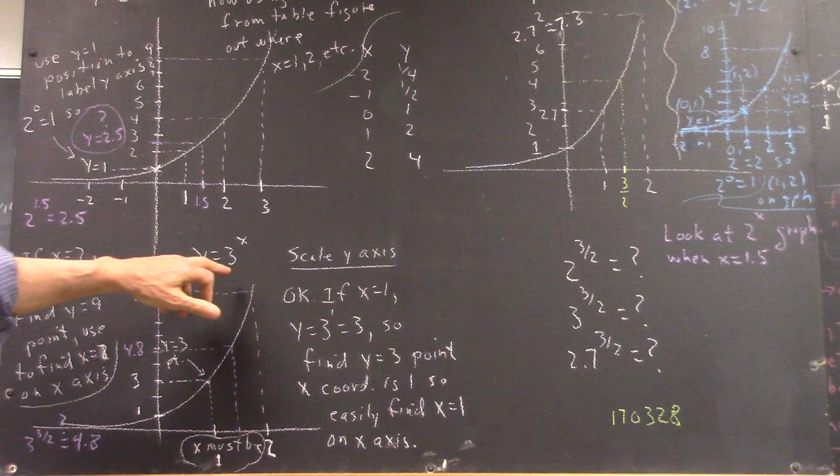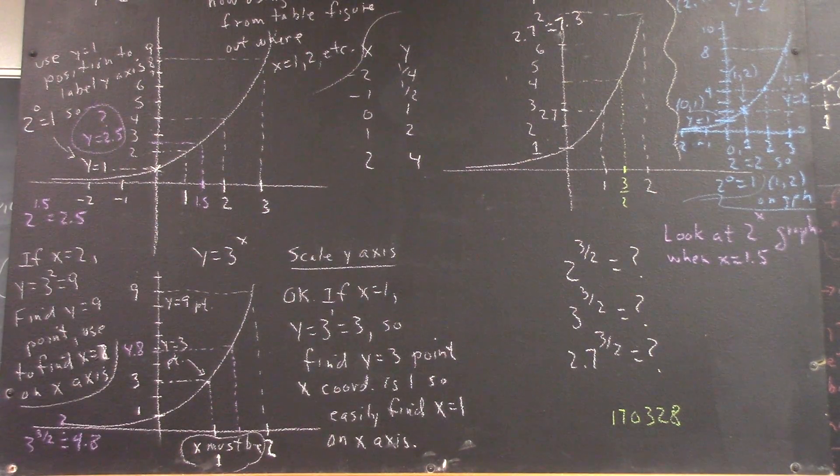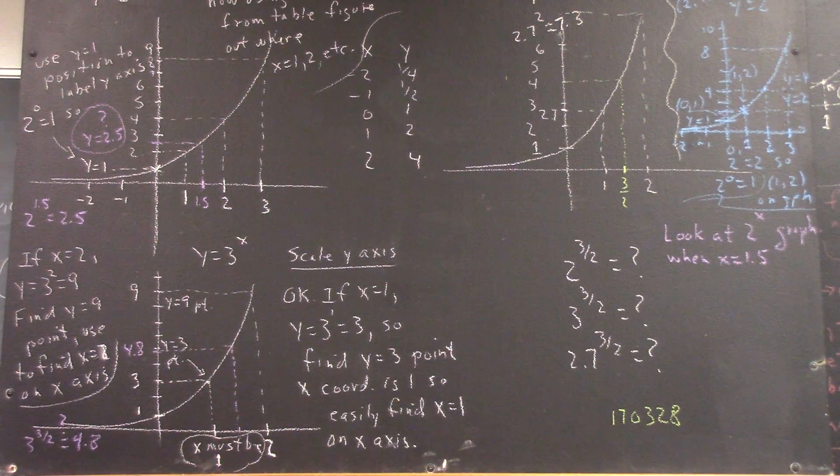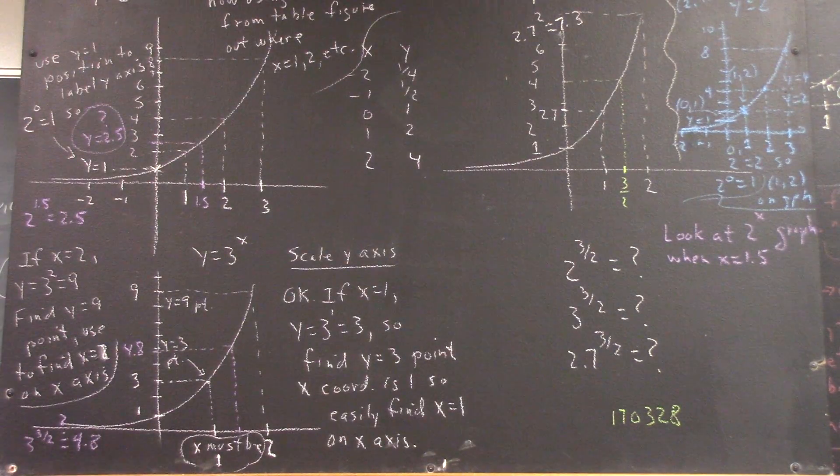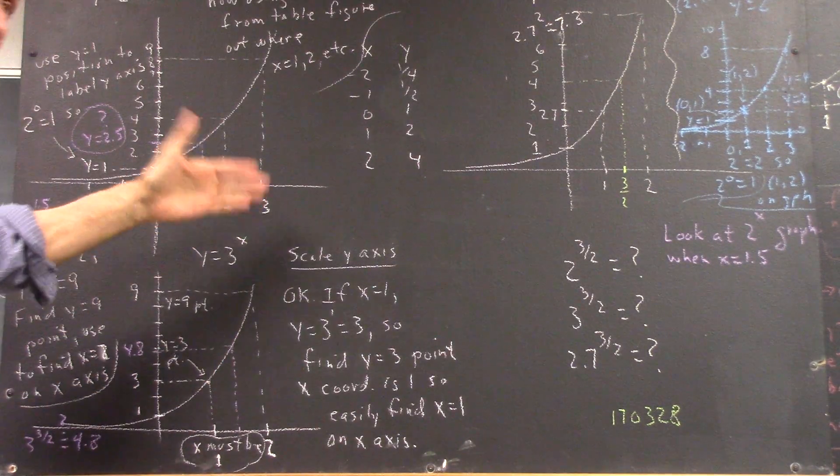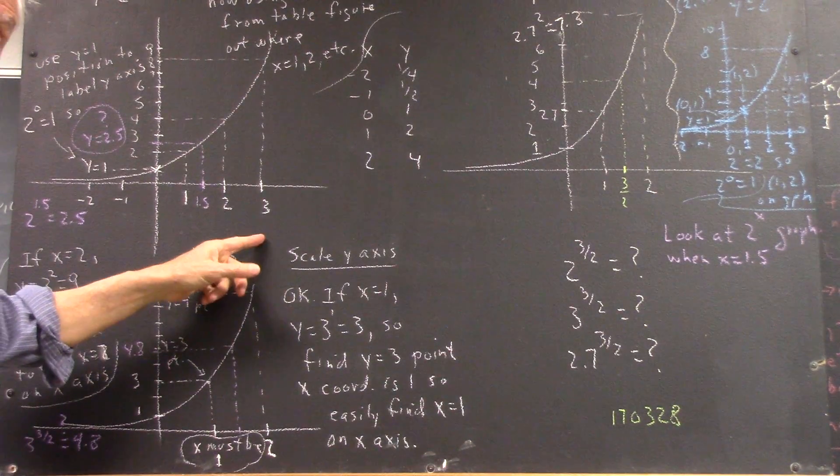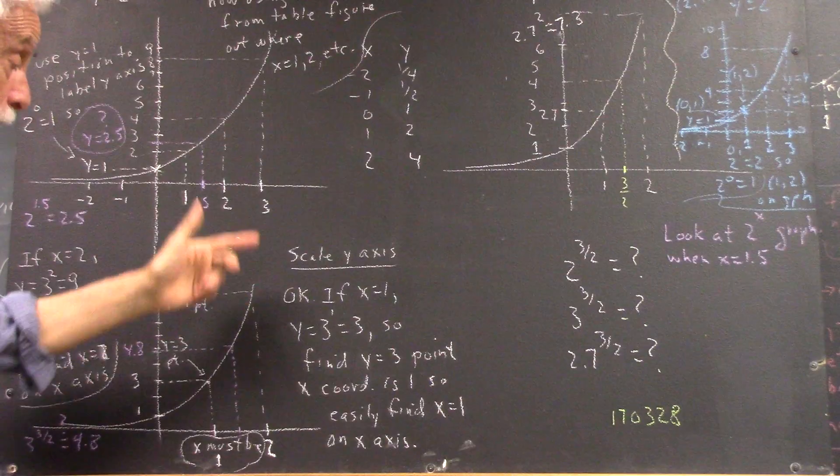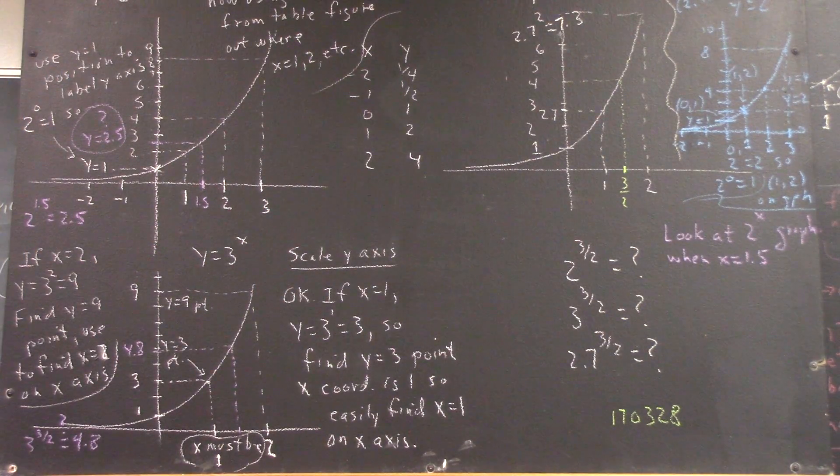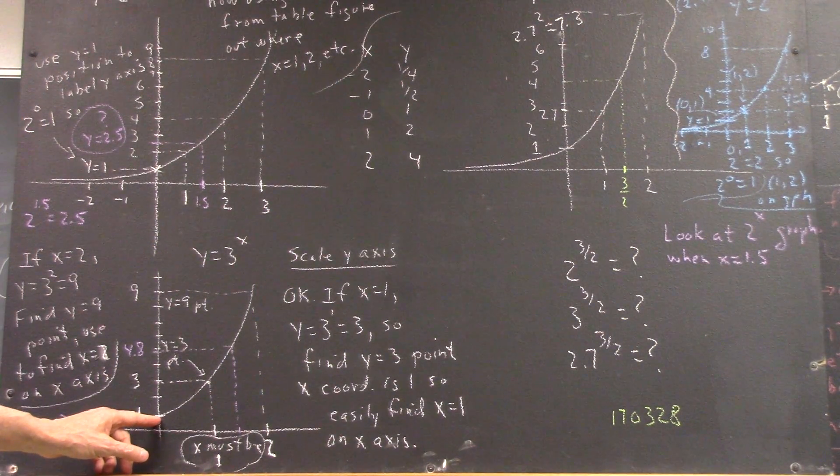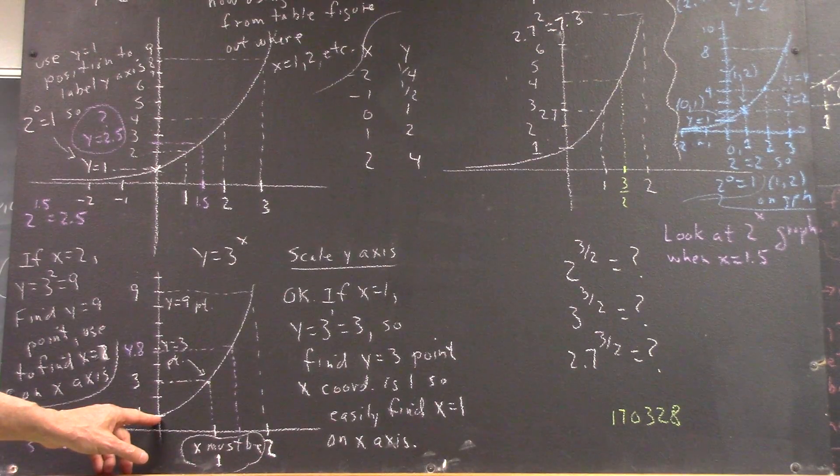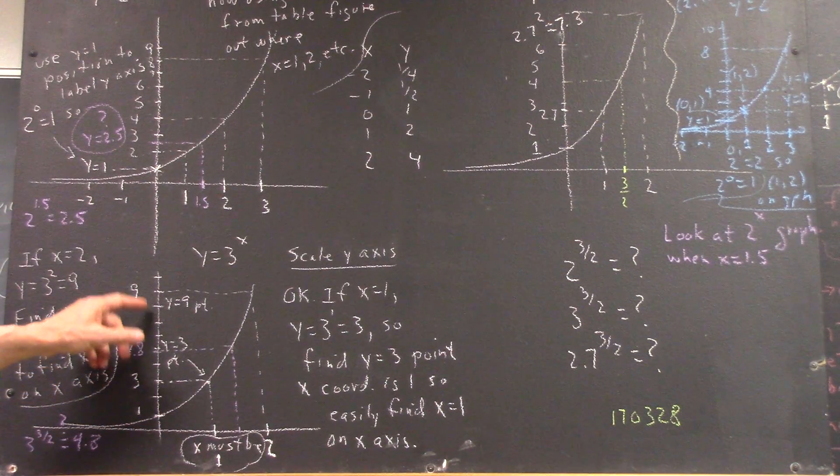Next exercise was to do the same thing for 3 to the x. Well, that's fairly easy to do. You just do the same thing you do for 2 to the x, but now you're doing 3 to the x. We know when x equals 0, 3 to the x is 1, because any number to the 0 is 1. So we know the point 0,1 lies on this graph. So that is 0,1. So that gives us our y scale.